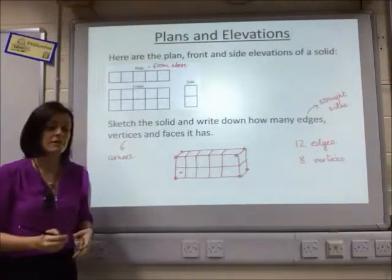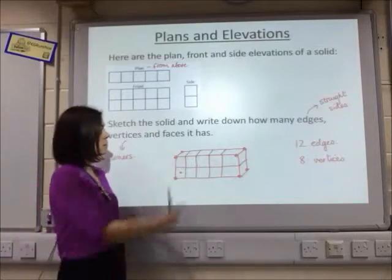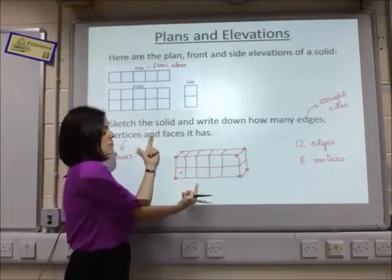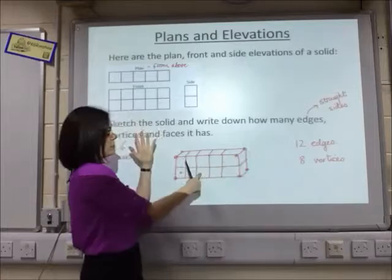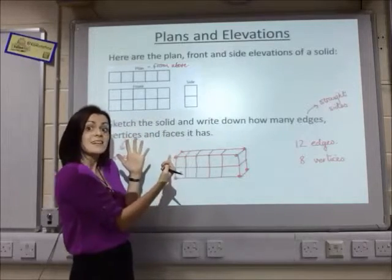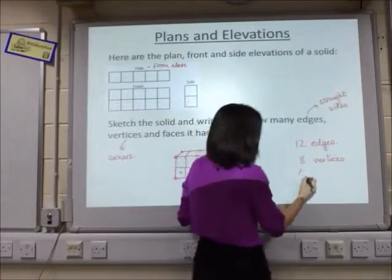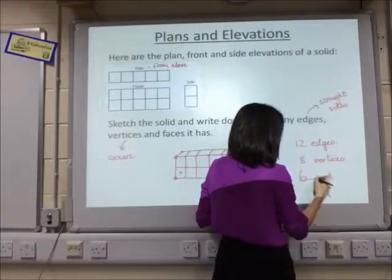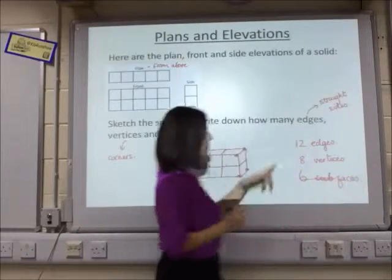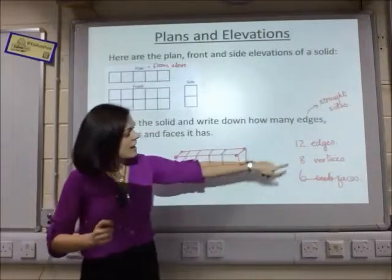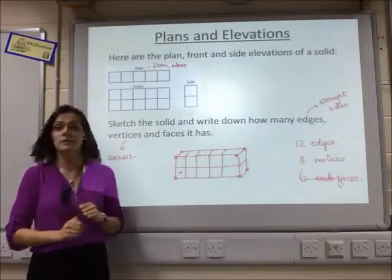Last but not least, surfaces are the flat faces. I've got a top, a bottom, a left side, a right side, a front and a back — six faces altogether for my cuboid. So I've got 12 edges, eight vertices and six faces.